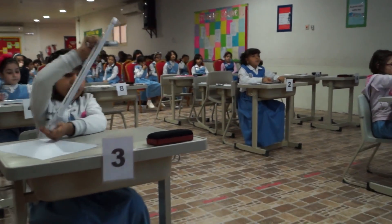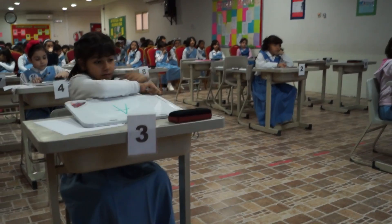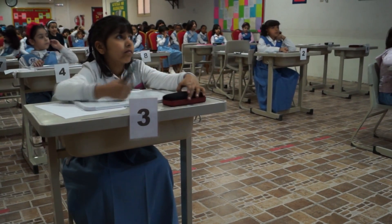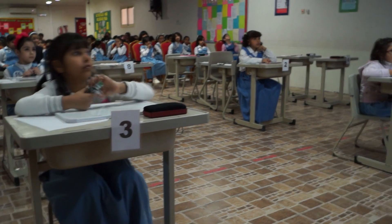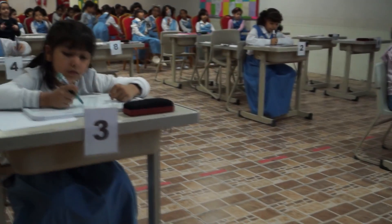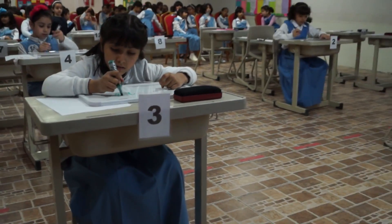Question number 3. There are 28 flowers in the meadow. We picked 17. How many flowers are there? Again, there were 28 flowers in the meadow. We picked 17. How many flowers are there? A: 9. B: 11. C: 13. D: 15.